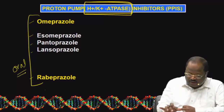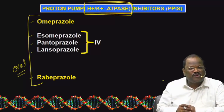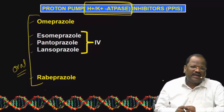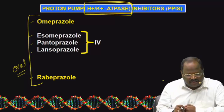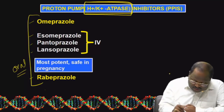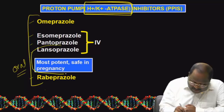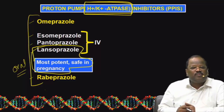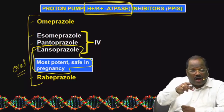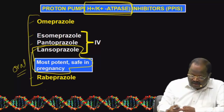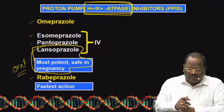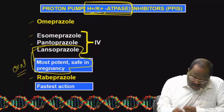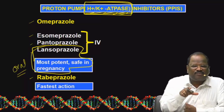Extra points: all PPIs are used orally, but omeprazole, pantoprazole, and lansoprazole can also be given intravenously. Lansoprazole is safe in pregnancy — important MCQ. The fastest acting proton pump blocker is rabeprazole.